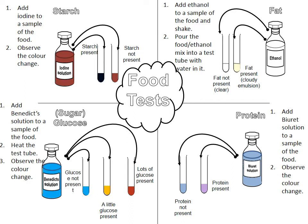Just to recap: to test for starch, you add iodine to the sample of the food and see if there's a colour change. If starch is present, the iodine will change from a brown colour to a blue-black colour. If starch is not present, the iodine will stay brown.